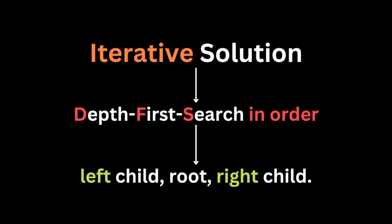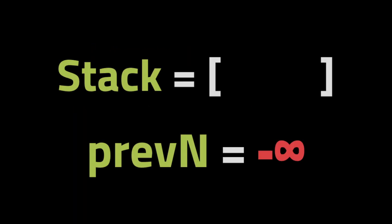For the iterative solution we're going to use depth-first search in-order traversal, meaning we visit the nodes in the order: left child, root, then right child. The first thing we're going to do is initialize an empty stack and a variable to keep track of the previous node. The stack is used to keep track of nodes that still need to be visited while traversing the tree in order.